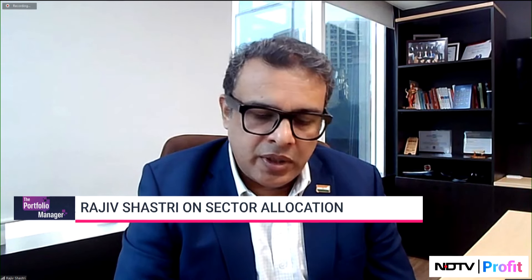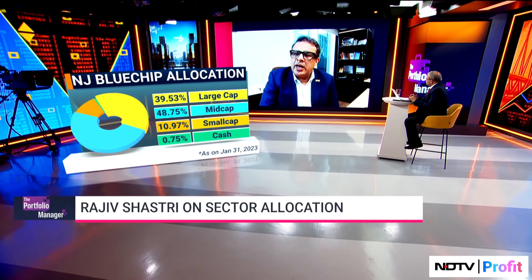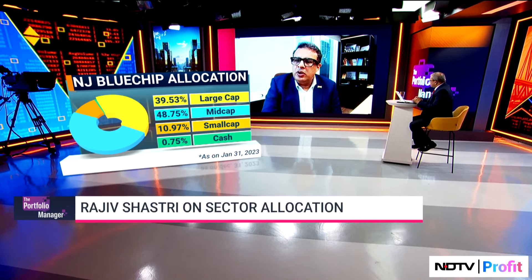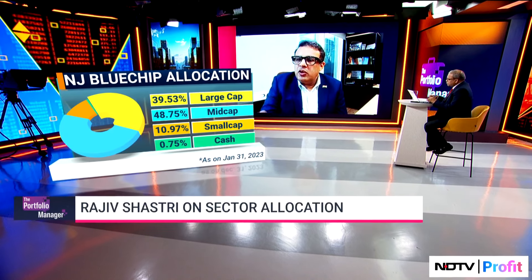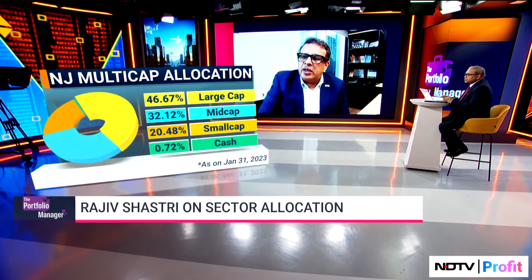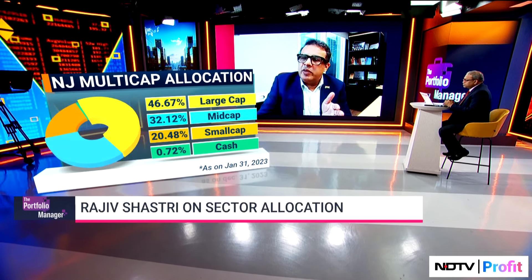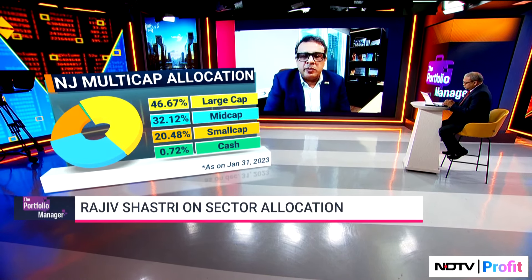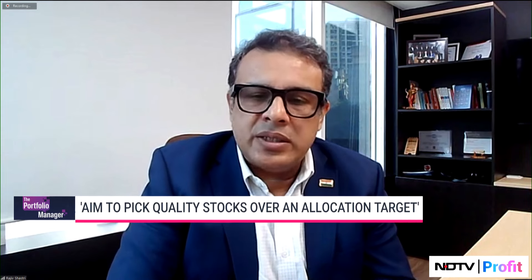If we are following an underlying factor thesis — let's take quality for example — and if I were to say I will always have a 10% allocation to lending companies, it is possible that I don't see any lending companies in the top 20 or 25 companies I want to buy. So if I want to buy lending companies specifically, I might have to go down the quality ladder. Instead of buying the top 25 companies by quality, I end up compromising the quality of my portfolio by putting capitalization-based or sector-based restrictions.